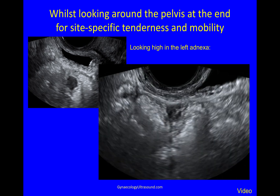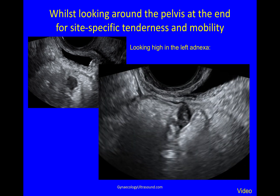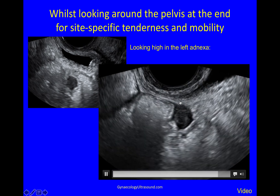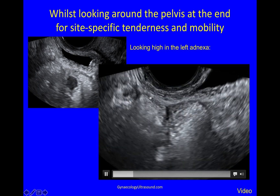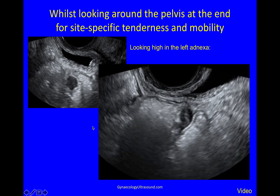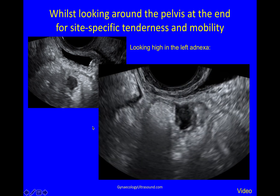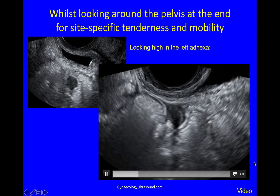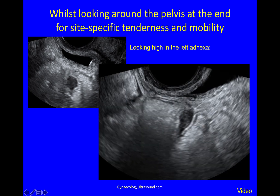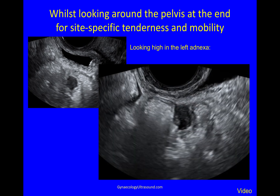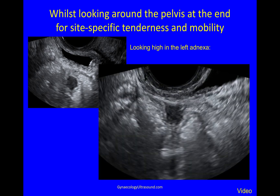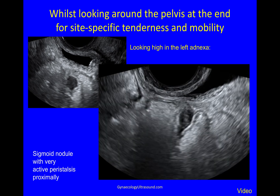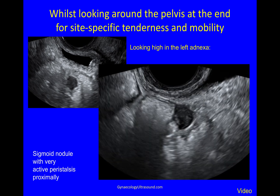Here's a video clip of that area. What you can see is just the edge of the bladder. You can see that this is entirely separate — this is in the bowel wall — and you can see a crazy amount of peristalsis around it. You can just see the white mucosa and submucosa overlying this nodule. So this is a very high lesion: a sigmoid nodule with very active peristalsis.